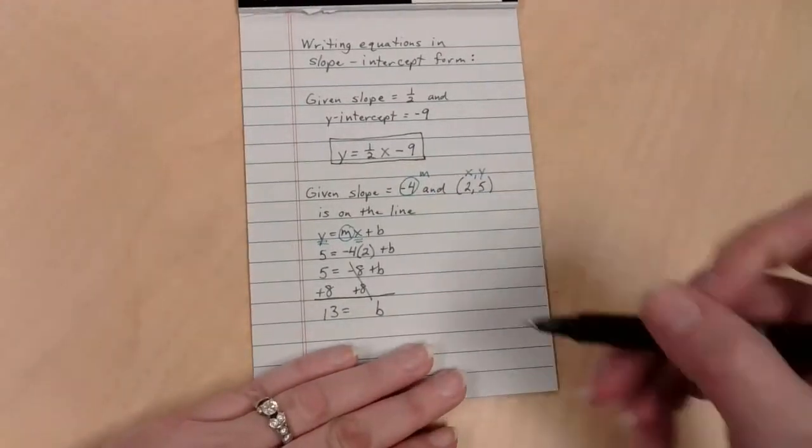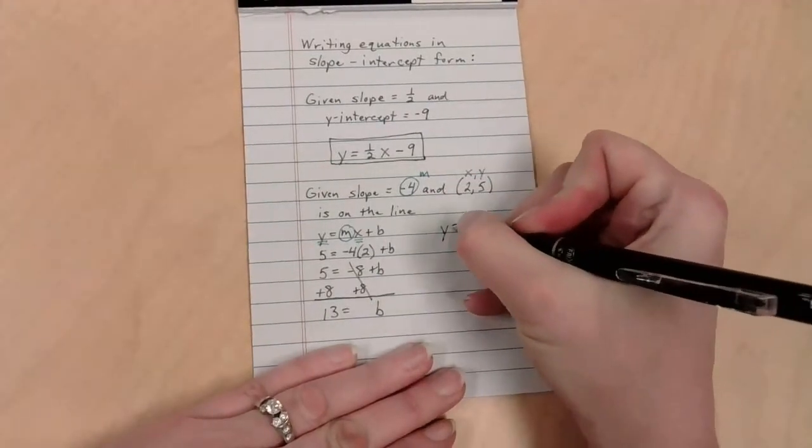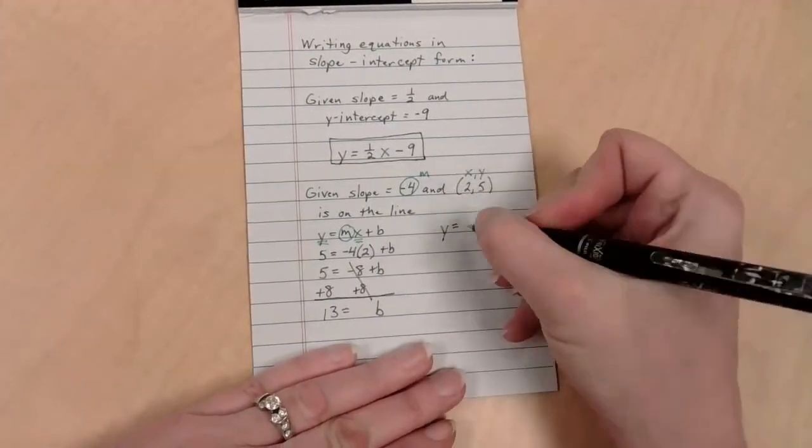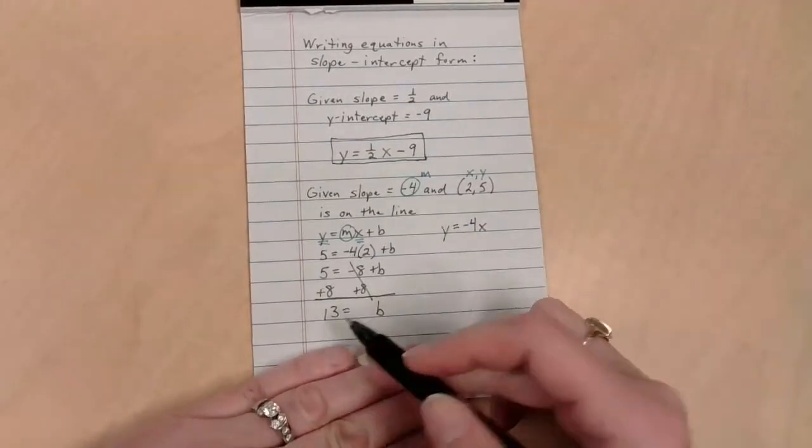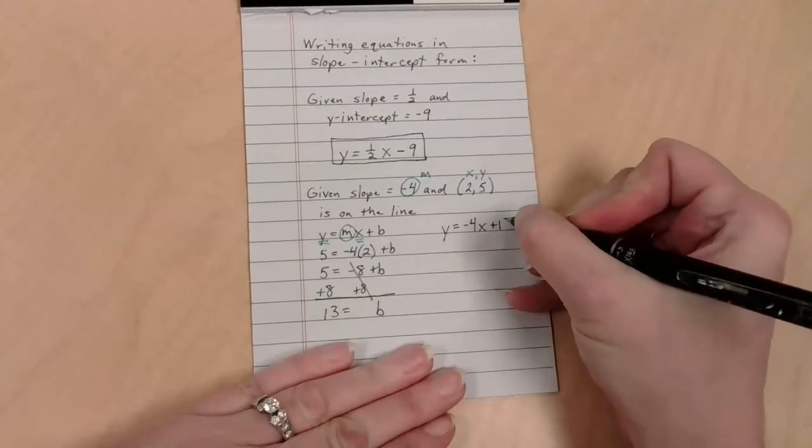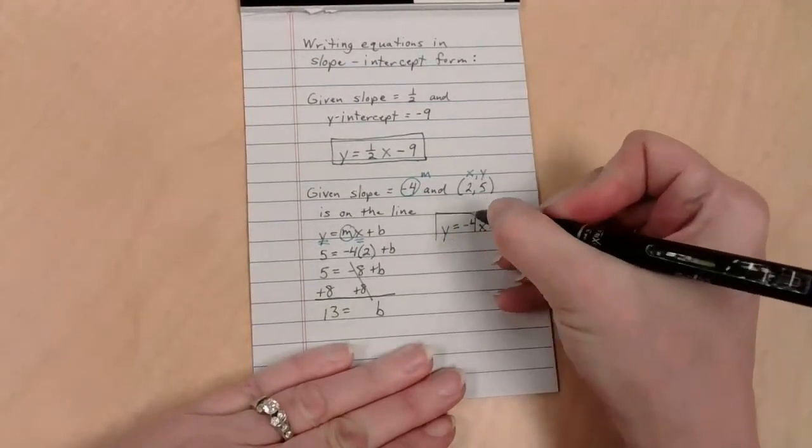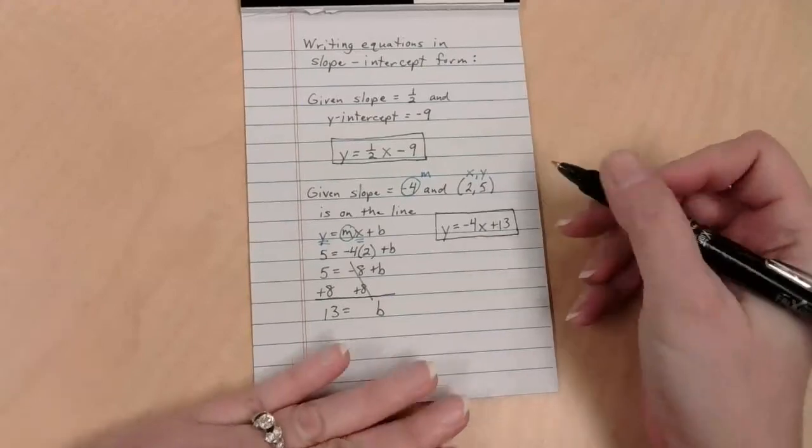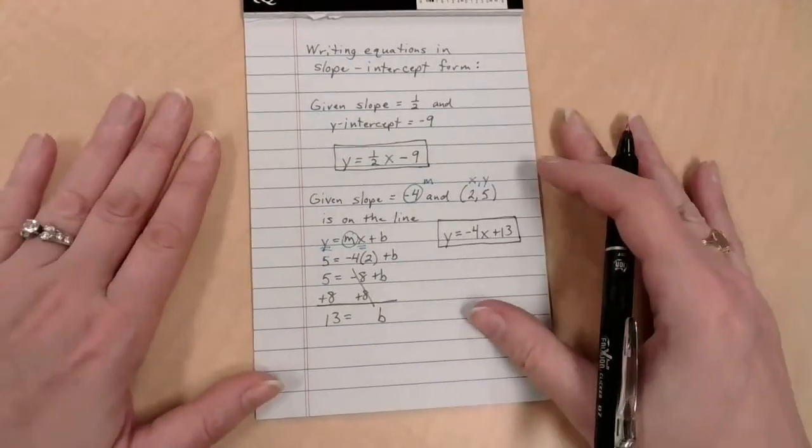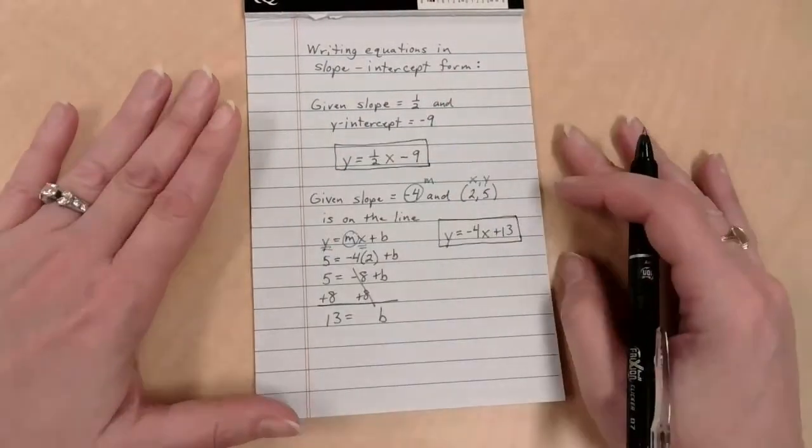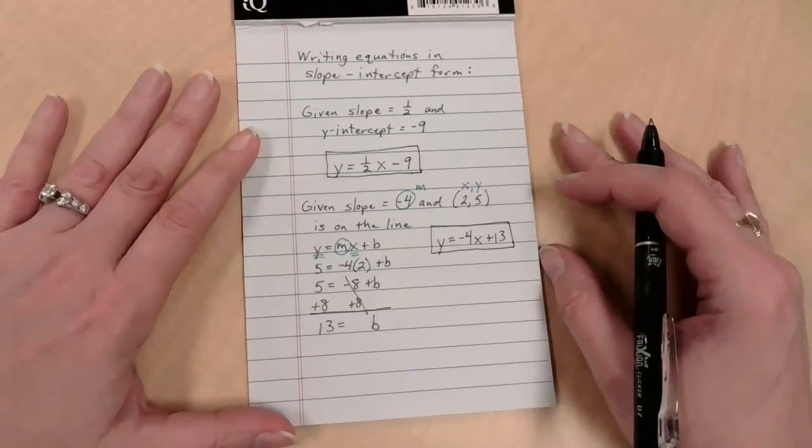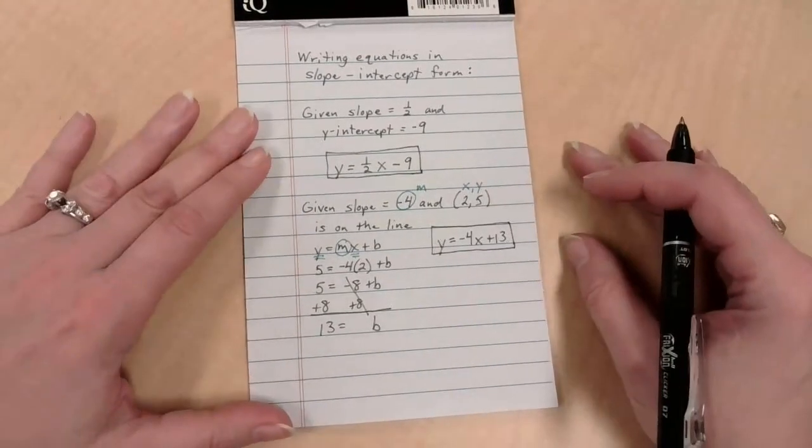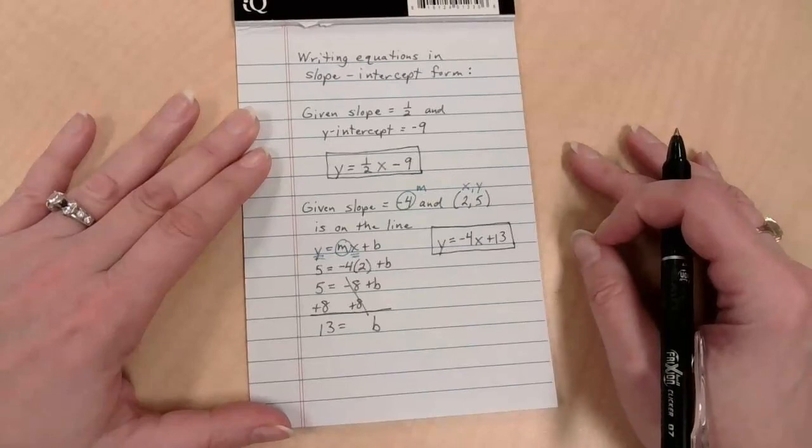We've got y equals m, that's negative 4, m times x, and then plus b, what's b? 13 plus 13. Ladies and gents, that is the equation of my line. There's a lot of stuff here, a lot of really good stuff. Stuff that you're going to see in a lot of places. But you do have to pay attention to details. Try to train your brain to think about all the tiny things, and just keep practicing.